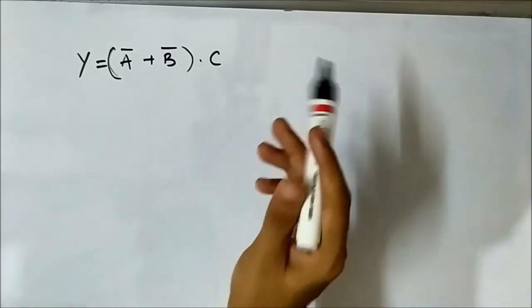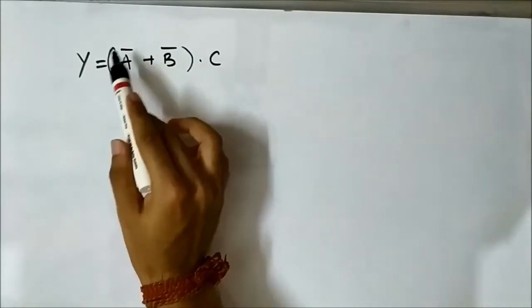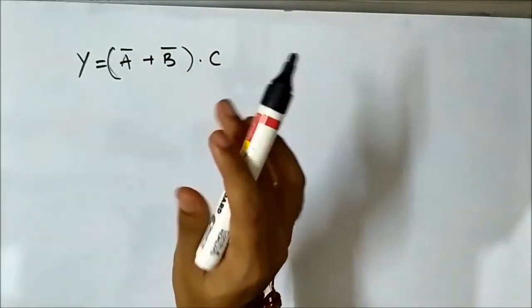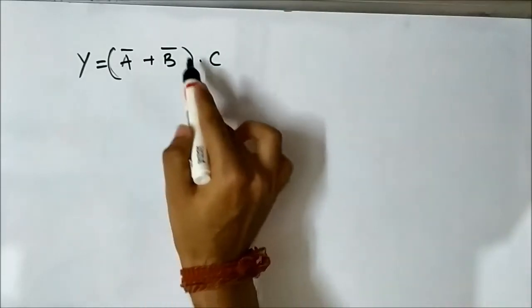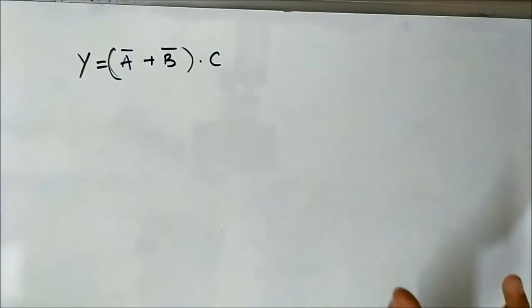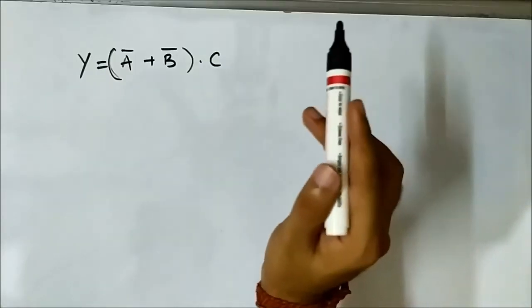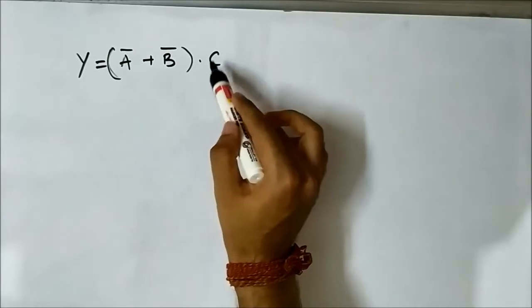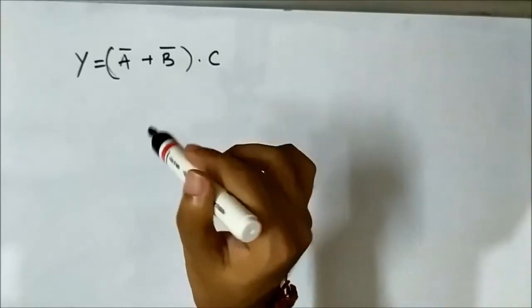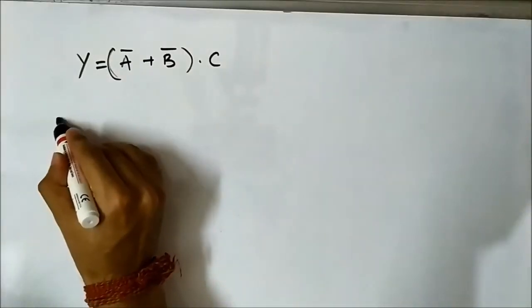Here, the complement variables — A bar and B bar — can be implemented using NOR gates. This portion, A bar plus B bar, can be implemented, but the AND sign can create some problems. So we have to modify this expression using De Morgan's theorem in such a way that this AND portion is converted into OR. Then we can easily implement it using the NOR gate.